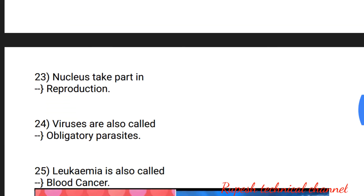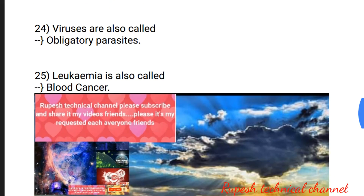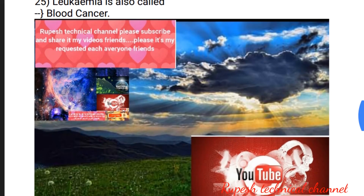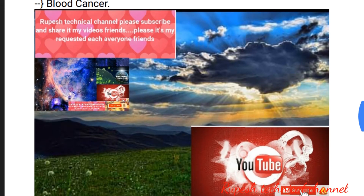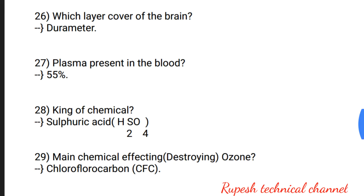Question number 22: unit of cell relation — meter per second squared. Question number 23: nucleus takes part in reproduction. Question number 24: viruses are also called obligatory parasites. Question number 25: leukemia is also called blood cancer. Please subscribe our channel and click the bell icon to get updates on new videos.